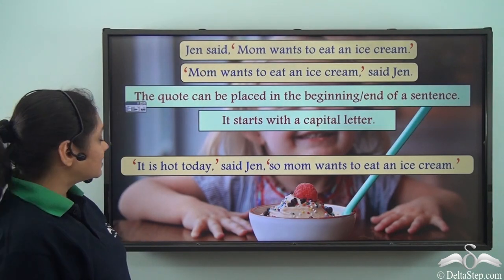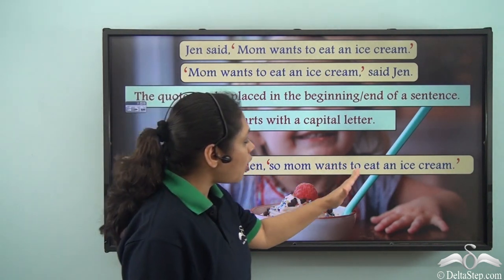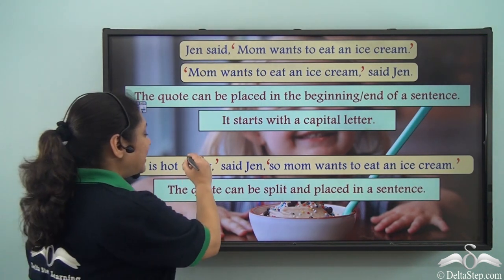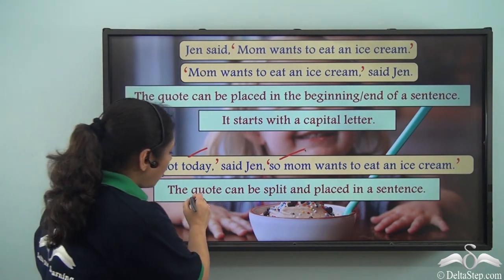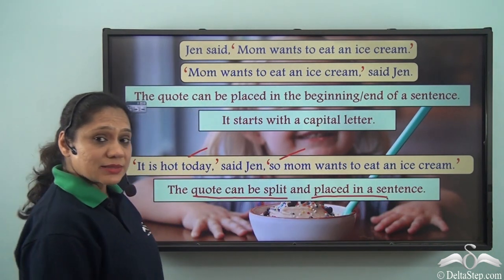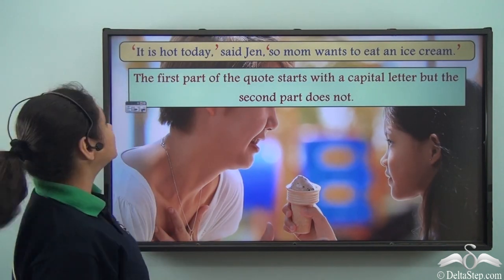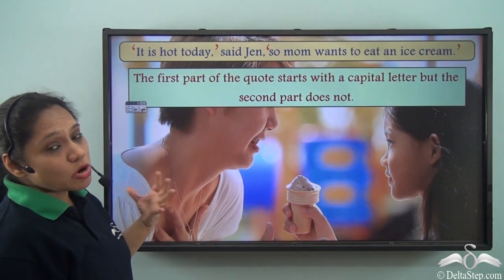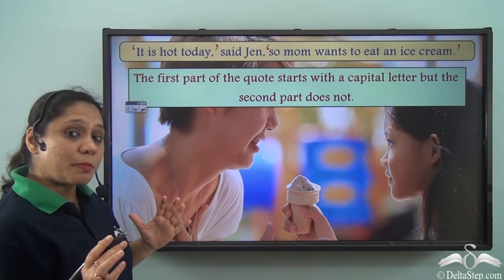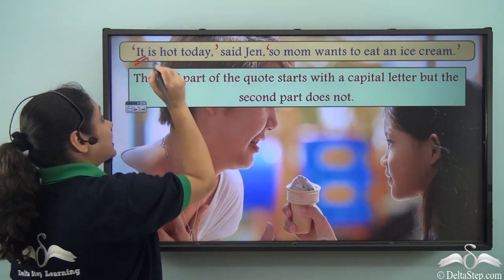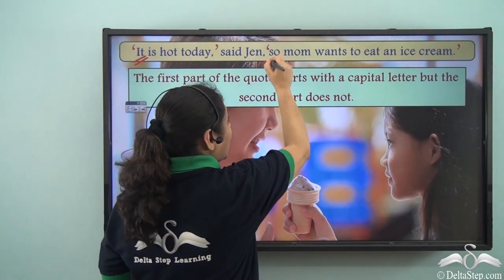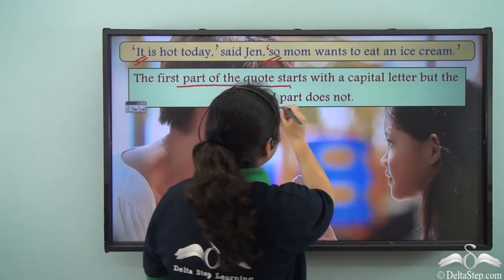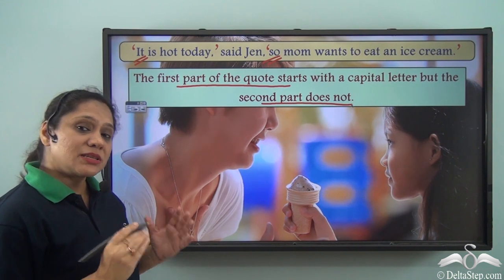We can also write a sentence where the quote is split in two parts, for example: 'It is hot today,' said Jen, 'so Mom wants to eat an ice cream.' Here the quote has been split and placed around a reporting clause. The first part of the split quote begins with a capital letter, but the second part does not begin with a capital letter when it is a continuation of the same sentence.